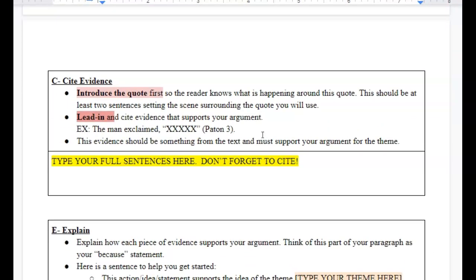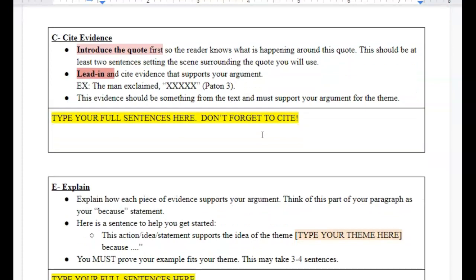Then, you're going to move on to C. You're going to cite your evidence. So first, you have to introduce your quote so that the reader knows what's happening around this quotation, right? Otherwise, it's called a dropped quote. You can't just throw a quote out there. You need to set the scene.